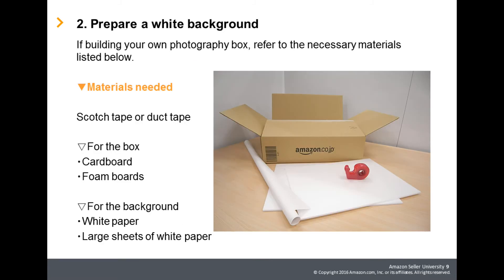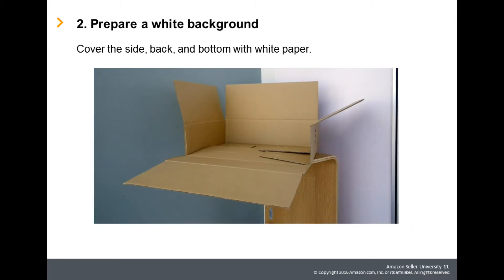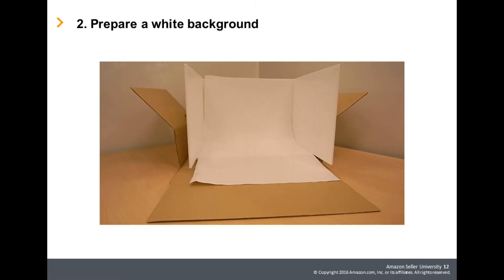If you are building your own photography box, here are the materials. Once you have everything ready, set up the cardboard and build a box that fits the size of the product you want to photograph. Cover the side, back, and bottom panels that are to be the white background with white paper. In this example, foam boards for the side panels and white paper for the back and bottom panels are used. But in order to create a white background, any material that is readily available can be used, such as the white backside of posters or calendar pages.